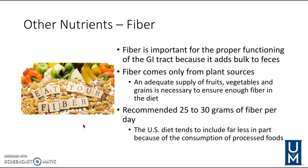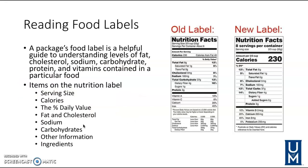Fiber is important for GI tract function — it adds bulk to feces and supports a healthy digestive system. Fiber comes only from plant sources, so eating green leafy vegetables, fruits like apples, and similar foods helps maintain good fiber levels. It is recommended to consume 25 to 30 grams of fiber per day. Food labels have also been updated recently to make key information more prominent — review how to read one.